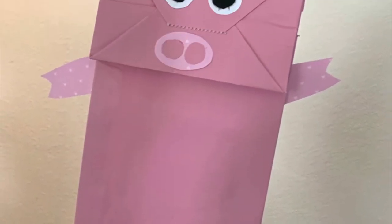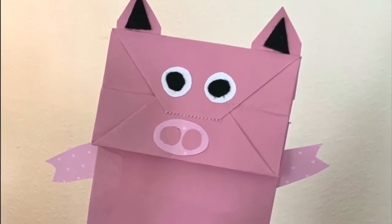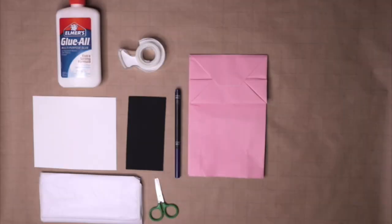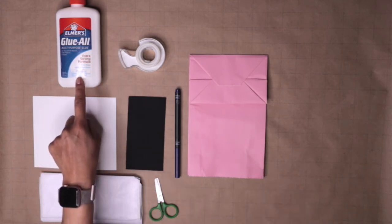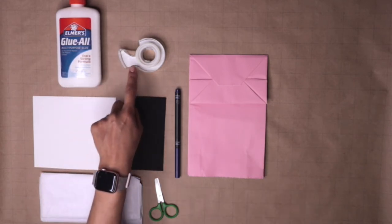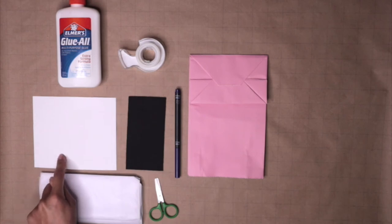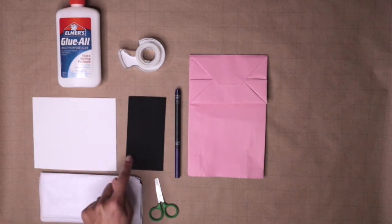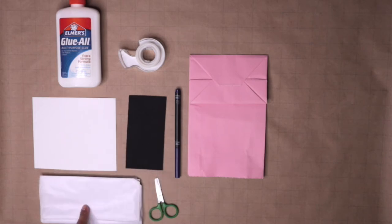Today we are going to make a paper bag puppet. The supplies you'll need are a paper bag, some glue or tape, paper, any dark colored material for the eyes, tissue paper, a pair of scissors, and a marker.